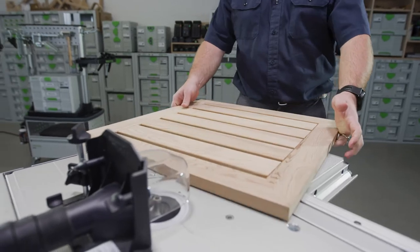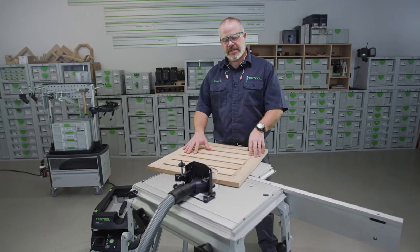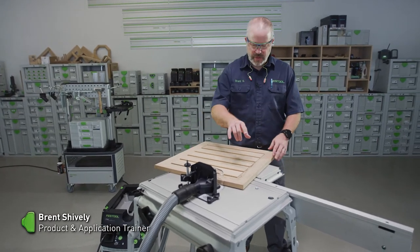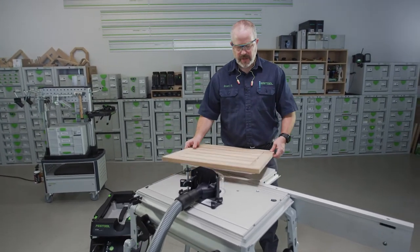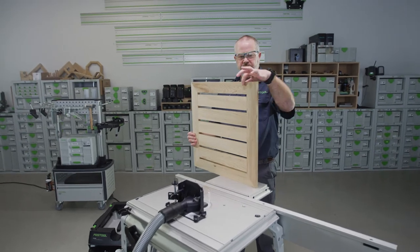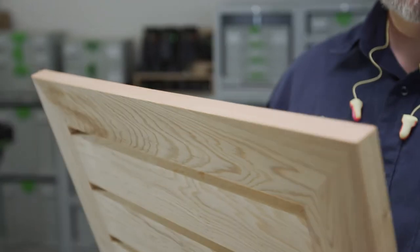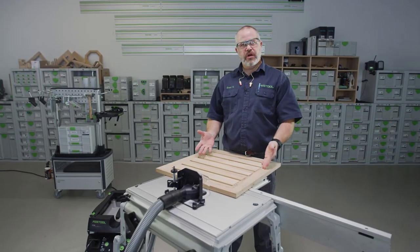So while everything else is in clamps drying up, made another table, slightly different design, same basic principle, but now we're going to use our CMS router table to soften up the edges around here. I'm going to use a roundover on the top and bottom, so when I get done, it's going to look like just a solid bull nose all the way around.